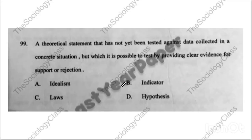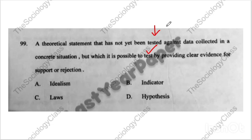Question ninety-nine: 'A theoretical statement that has not yet been tested against data collected in a concrete situation, but which it is possible to test.' Any statement we make that we will test in the future to see whether it is rejected or supported — the correct answer is D — hypothesis.